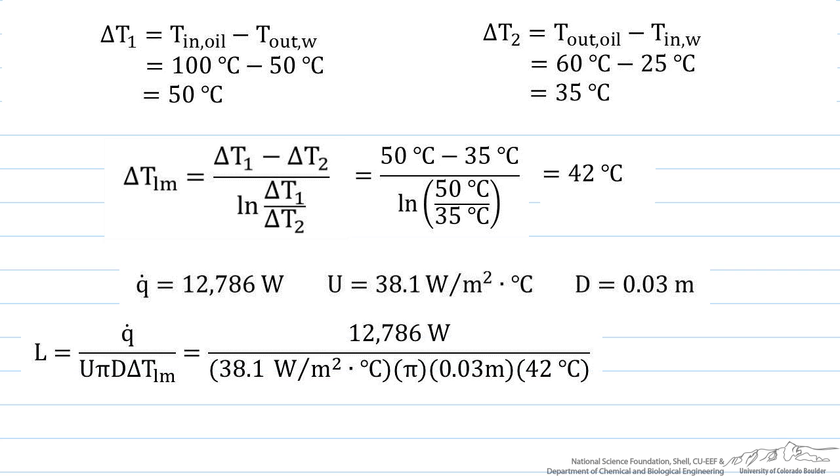L is going to equal our heat transfer rate divided by our overall heat transfer coefficient times pi times this diameter times our delta T log mean. And when we calculate this, we find that the needed length for our heat exchanger is 84.8 meters.